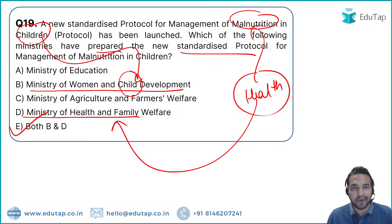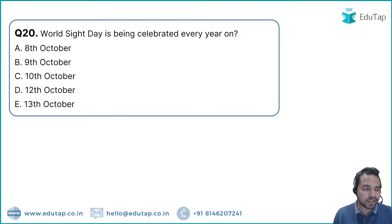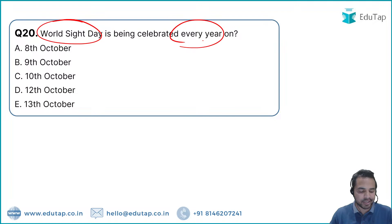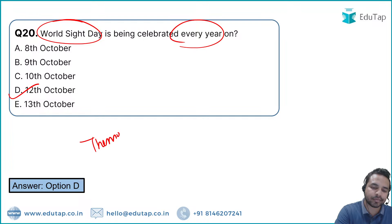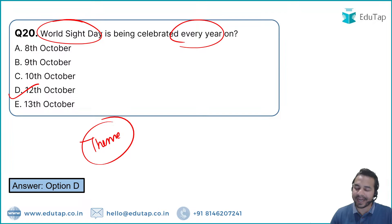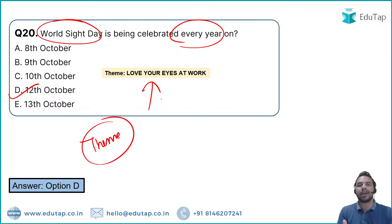Question 21: World Sight Day is celebrated every year on 12th October — Option D. The theme for World Sight Day 2023 is 'Love Your Eyes at Work.' Remember to take care of your eyes whether you work at home or in an office.